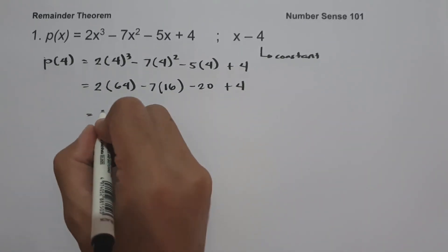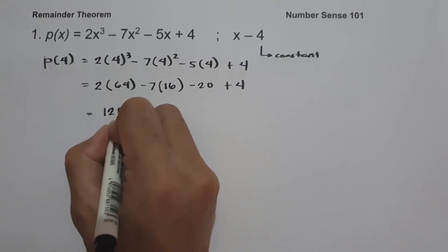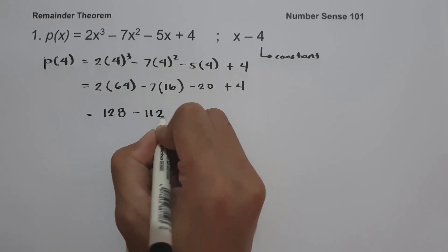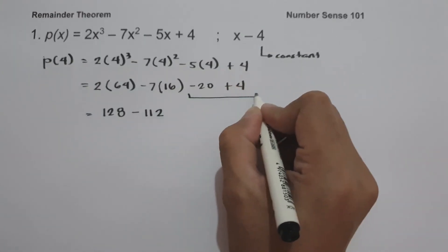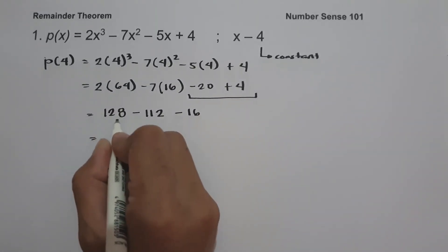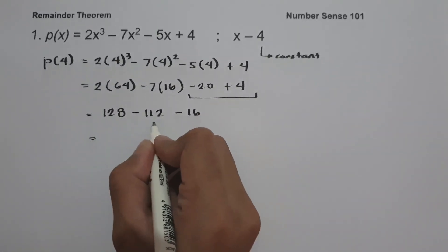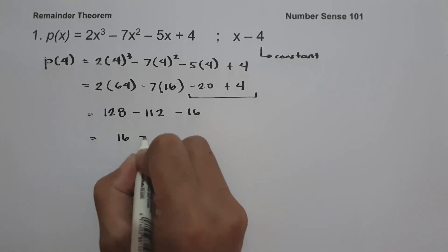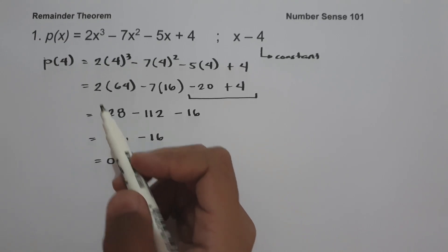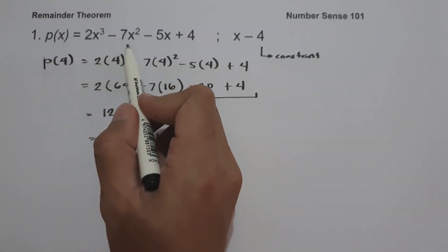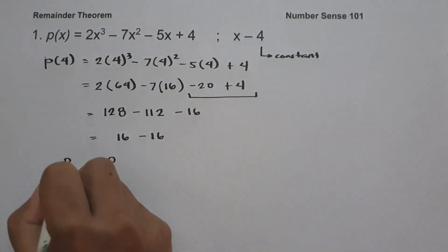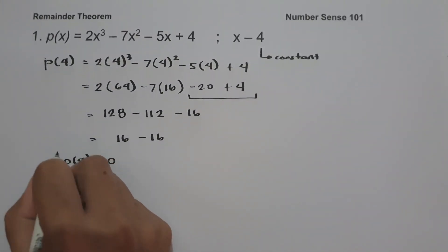2 multiplied by 64 is 128. Negative 7 times 16 is negative 112. Negative 20 plus 4 is negative 16. So 128 minus 112 is 16, minus 16, and that is 0. So the remainder of 2x cubed minus 7x squared minus 5x plus 4 divided by x minus 4 is 0, and this will be our answer.